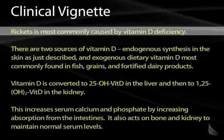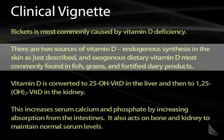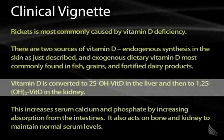The most common cause of rickets is vitamin D deficiency. There are two sources of vitamin D: endogenous synthesis in the skin and exogenous dietary sources. Vitamin D is most commonly found in foods like fish, grains, and fortified dairy products. The vitamin D made in the skin and obtained from the diet is not the active form — once in the bloodstream, it must be converted first to 25-hydroxy vitamin D in the liver, then to 1,25-dihydroxy vitamin D in the kidney.